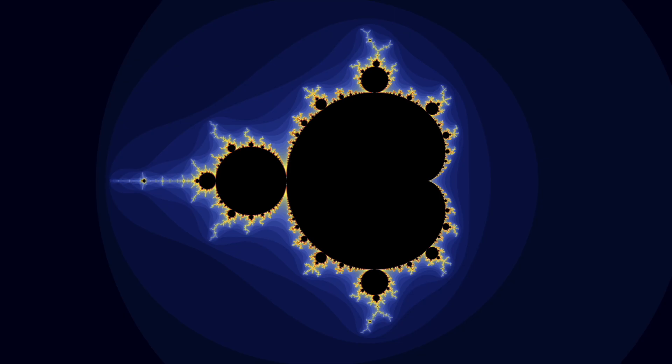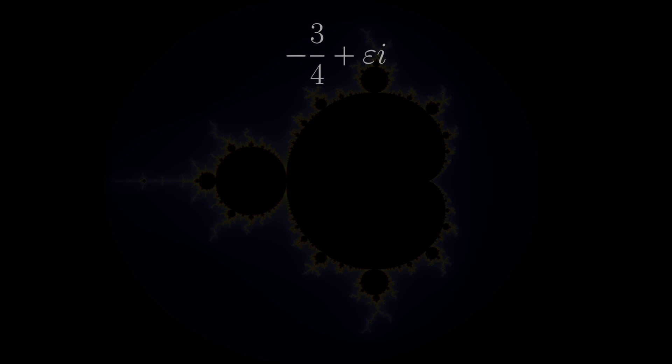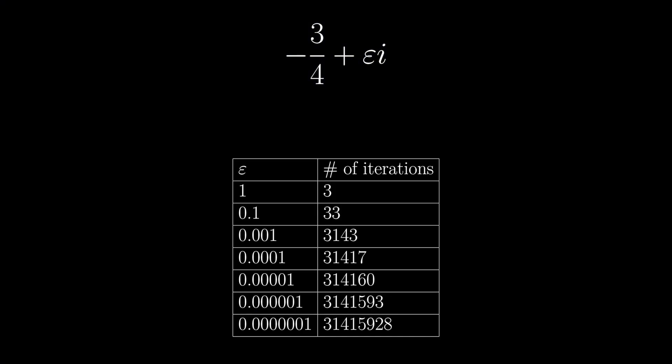In 1991, computer scientist David Boll attempted to demonstrate this by computing the number of iterations it took for the complex number minus 3 quarters plus i times epsilon to diverge for smaller and smaller values of epsilon. He noticed this very interesting pattern emerge.